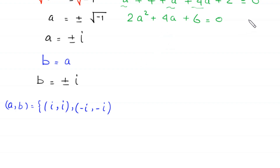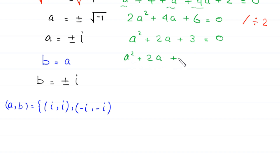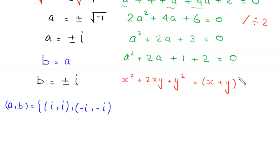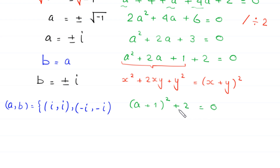Moving negative 2 to the left gives 2a squared plus 4a plus 6 equals 0. Dividing the whole equation by 2 gives a squared plus 2a plus 3 equals 0. We rewrite 3 as 1 plus 2, and recognize that a squared plus 2a plus 1 forms the perfect square (a plus 1) squared.